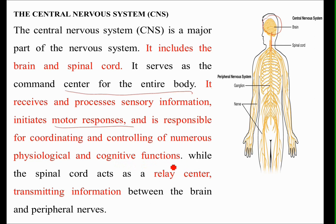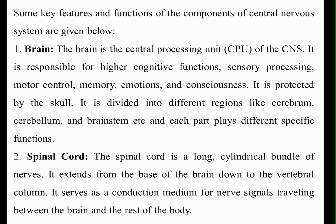The CNS is responsible for coordinating and controlling numerous physiological and cognitive functions. Without us even knowing, we can carry out certain simultaneous functions with the help of the central nervous system. The spinal cord acts as a relay center, transmitting information between the brain and the peripheral nervous system. The brain functions like a CPU — the central processing unit of the CNS.